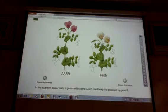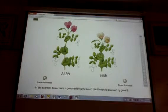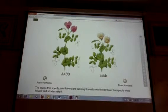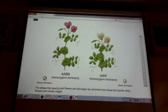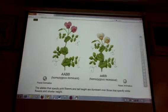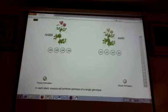In this example, flower color is governed by gene A and plant height is governed by gene B. The alleles that specify pink flowers and tall height are dominant over those that specify white flowers and shorter height. In each plant, meiosis will produce gametes of a single genotype.